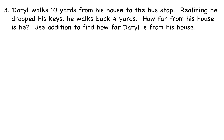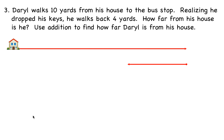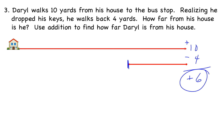Daryl walks 10 yards from his house to the bus stop, then walks back 4 yards after dropping his keys. How far from his house is he? We model this as 10 plus negative 4. Subtract the numbers and keep the sign of the bigger one: he ends up 6 yards away from his house.